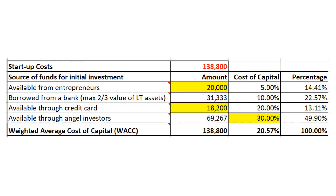Looking at our story: we needed $138,800. Self-financing contributed $20,000. The bank provided collateral-based lending of two-thirds of long-term assets, which came to $31,333. Together those still weren't enough, so we turned to credit cards — the two partners together could charge $18,200. Still not enough, so they went to angel investors for the remaining $69,267, finally covering the full startup cost.